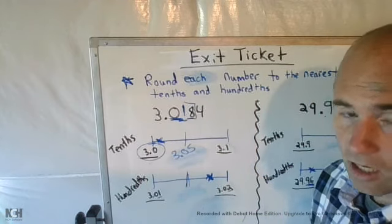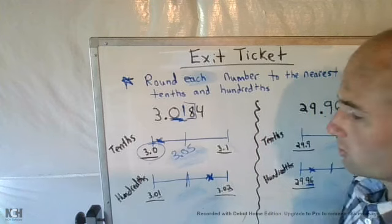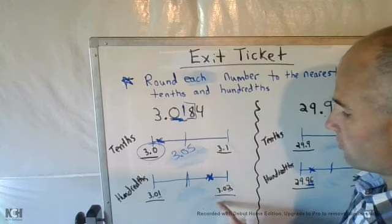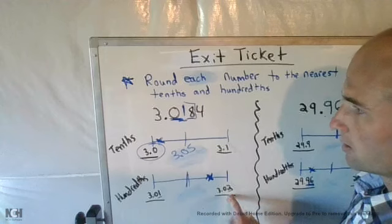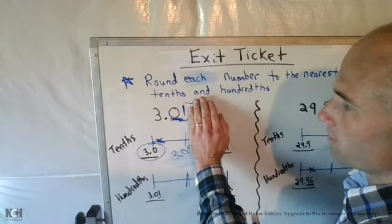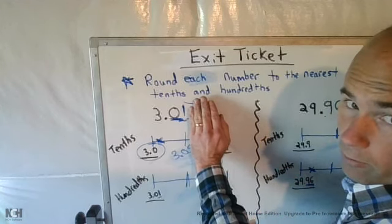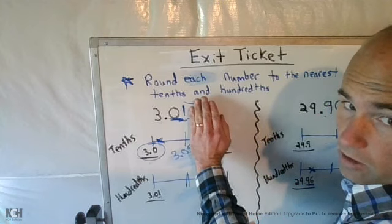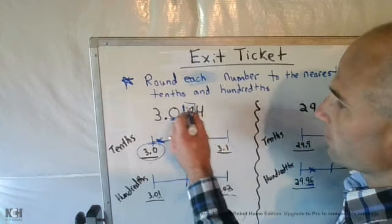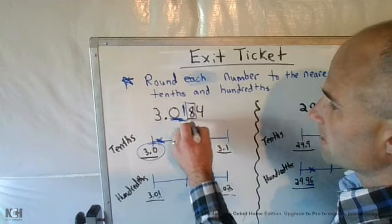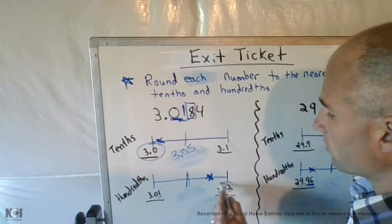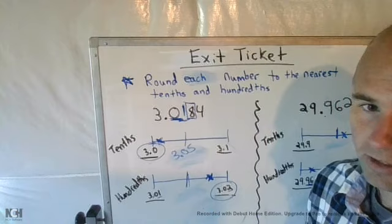Rounding to the nearest hundredths place, I would choose three and one-hundredths and three and two-hundredths. Since I have three and one-hundredths as one of my options, the next one up would be three and two-hundredths. I would then look at the thousandths place and say five and above, give it a shove, up to three and two-hundredths.